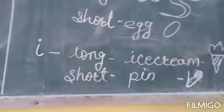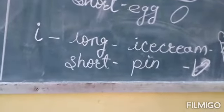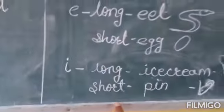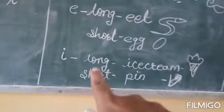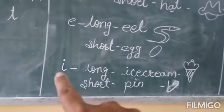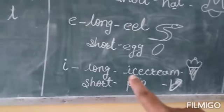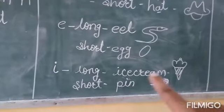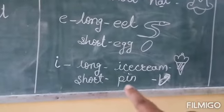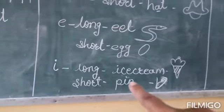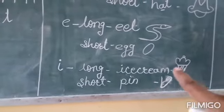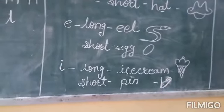Next is I. I also has two sounds, long and short. So the long sound of I is I, I, ice cream. The short sound of I is I, I, pin. Ice cream and pin.